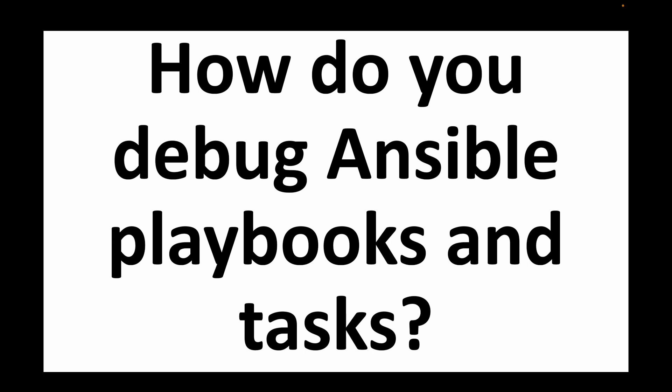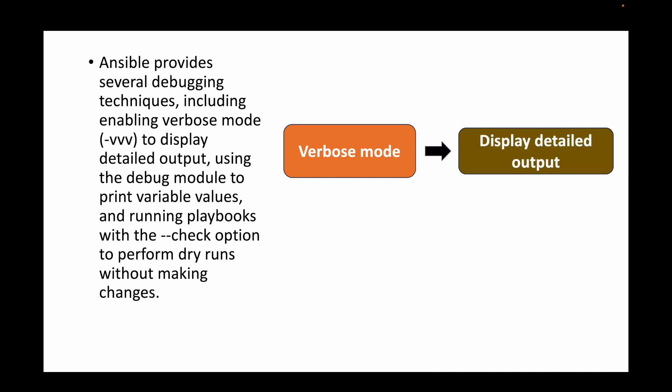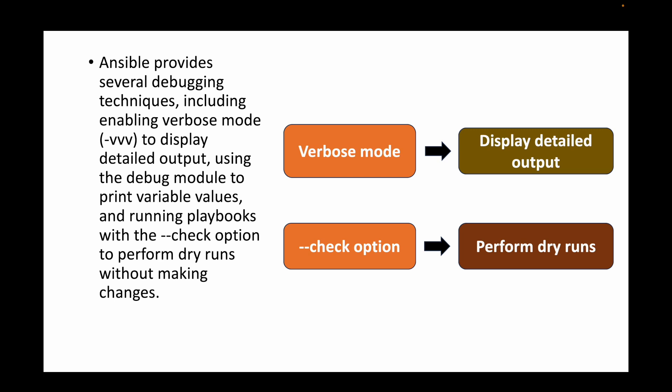The next question is: how do you debug Ansible playbooks and tasks? Ansible provides several debugging techniques. The verbose mode, using the -vvv flag, displays detailed output about the playbook or task being executed. You can also use the debug module to print variable values. Additionally, the --check flag performs dry runs, showing what changes a playbook would introduce without actually executing them on the remote machines.